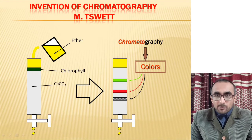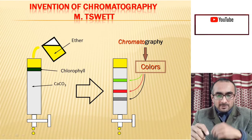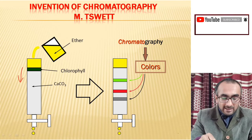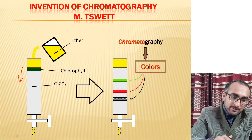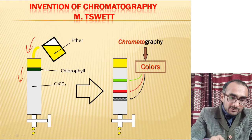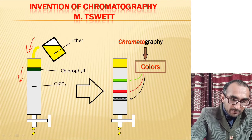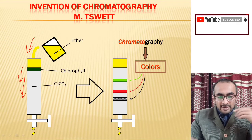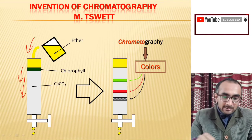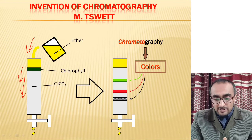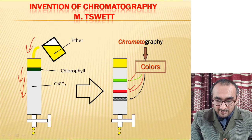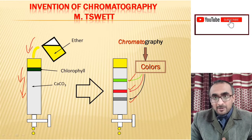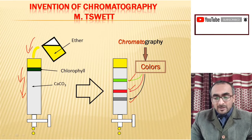The invention of chromatography was done by Mikhail Tswett, a botanist who was working on plant pigments. Tswett extracted plant pigments and loaded them on top of a column packed with calcium carbonate, then poured ether on the top. The ether carried this mixture of leaf pigments across the calcium carbonate. Calcium carbonate worked as the stationary phase, and separation of pigments occurred, producing three different colored spots.